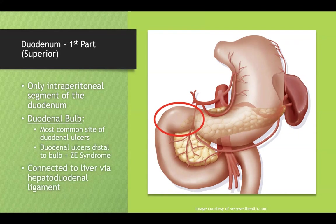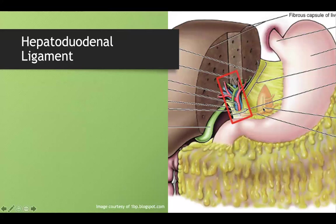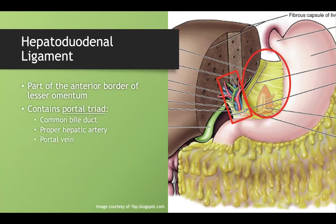An important landmark is that the liver and duodenum connect at the duodenal bulb via the hepatoduodenal ligament. This ligament contains three vessels running from the duodenal bulb to the liver, and it forms the anterior border of the lesser omentum. Importantly, it contains our portal triad, which is made of the common bile duct, the proper hepatic artery, and the portal vein.